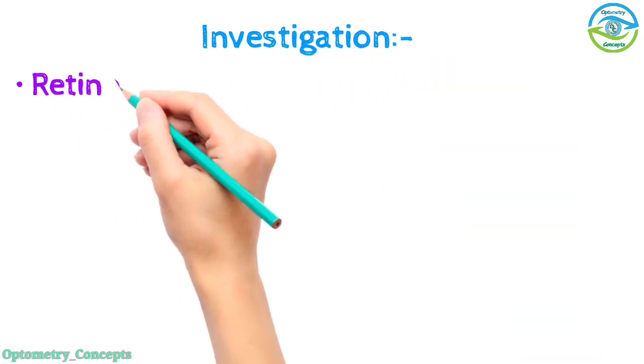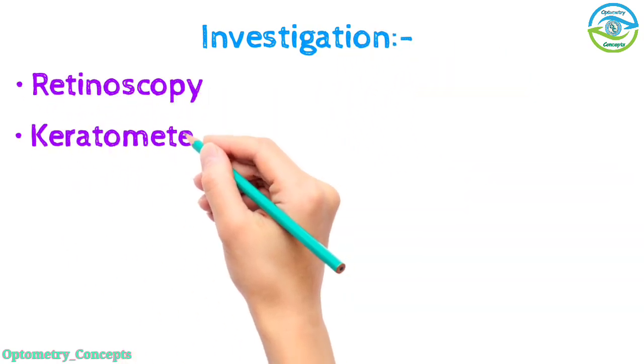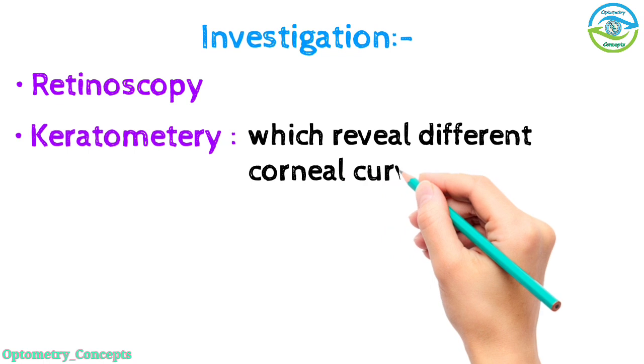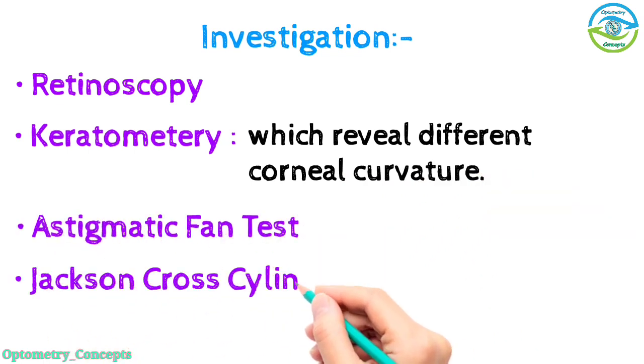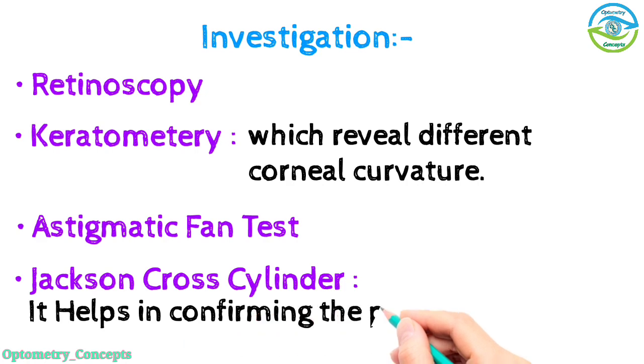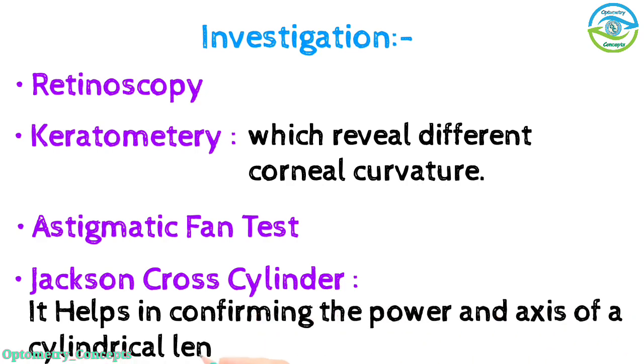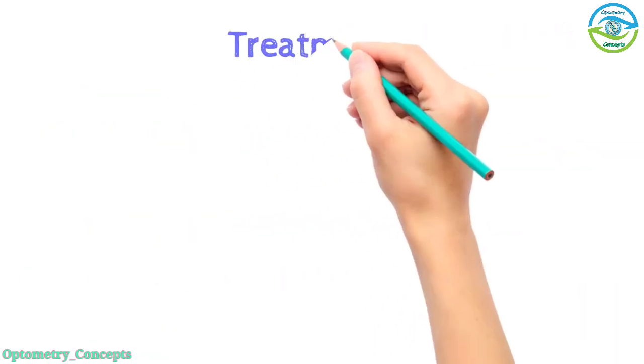Investigation: retinoscopy, keratometry which reveals different corneal curvature, astigmatic fan test and Jackson cross cylinder - it helps in confirming power and axis of cylindrical lenses. Treatment: astigmatic errors are treated by cylindrical lens.